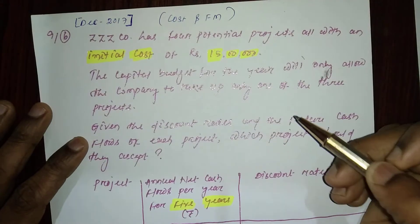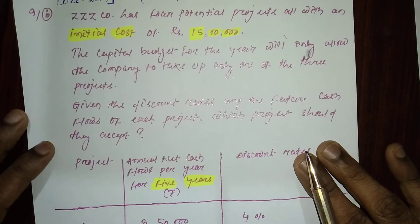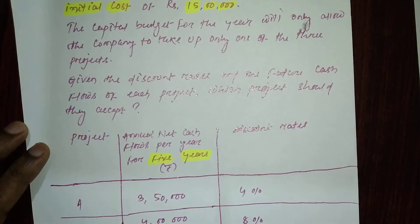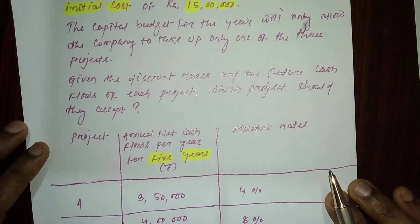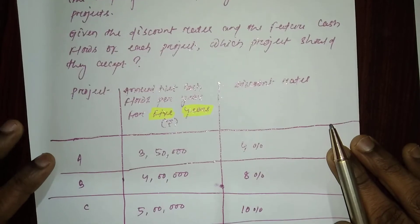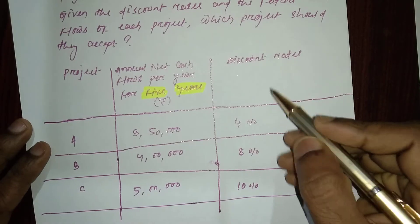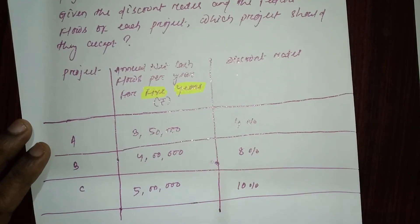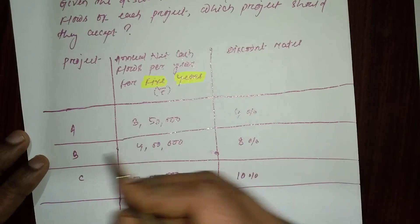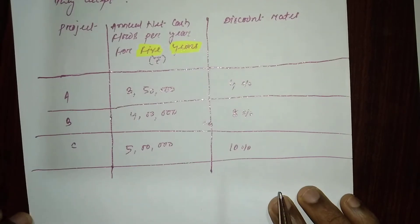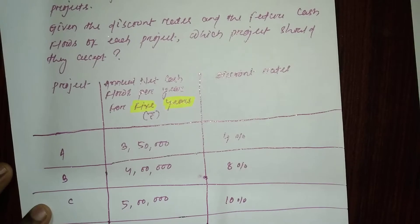The capital budget for the year only allows the company to take on only one of the three projects. Given the discount rates and the future cash flows of each project, which project should they accept? Annual net cash flows for five years are given: three lakh fifty for Project A, four lakh for Project B, five lakh for Project C. Discount rates: Project A four percent, Project B eight percent, Project C ten percent.